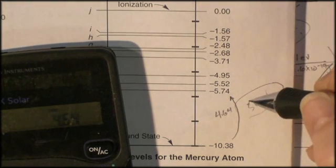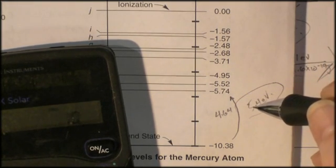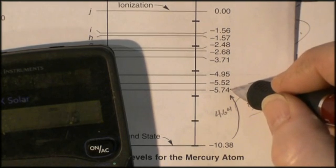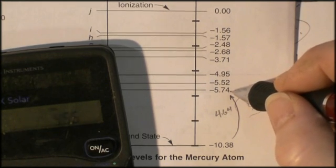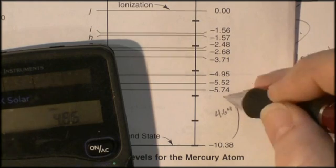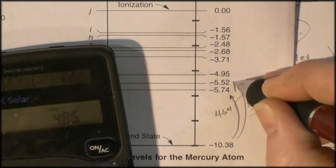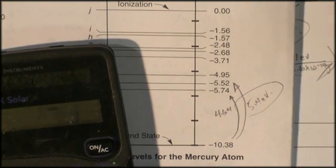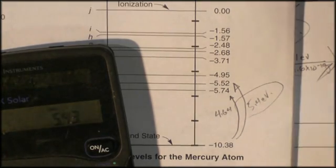Could it get us to the next state? Let's see. 10.38 minus 5.52. 4.86. Yep, we could get up to here. 10.38 minus 4.95. 5.43. 5.43 in there.